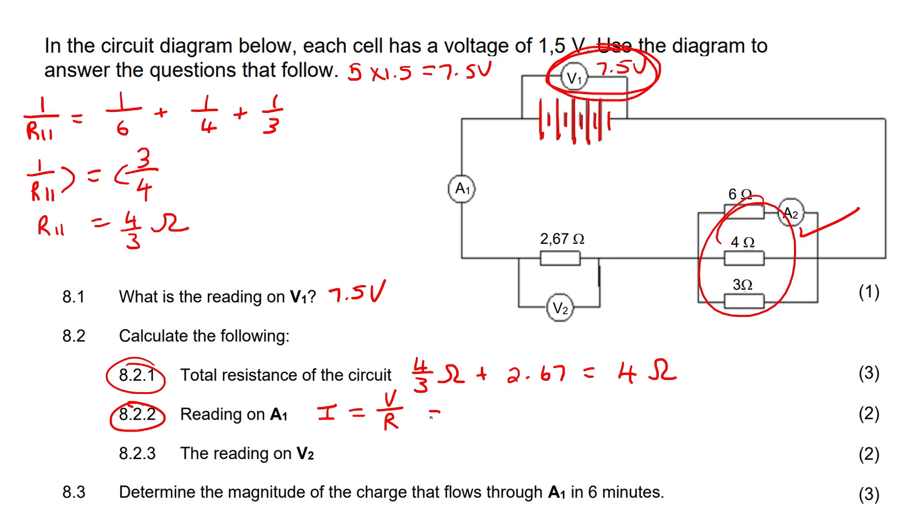let's use the total voltage, which is 7.5, then you have to use the total resistance in the circuit, which we just calculated was 4. If we round that to two decimal places, that'll be about 1.88 amps.